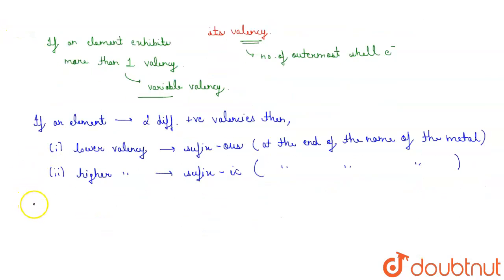So iron is a metal that exhibits different valencies. It exhibits +2 and +3 valencies.